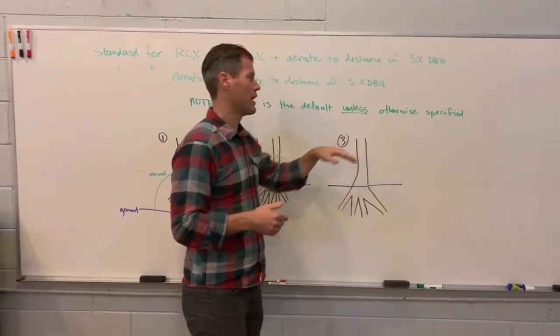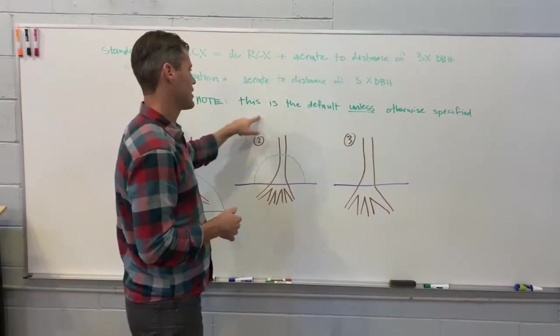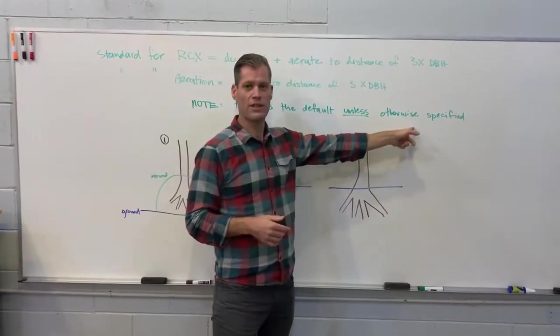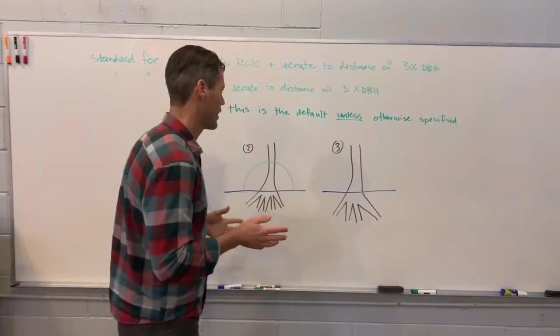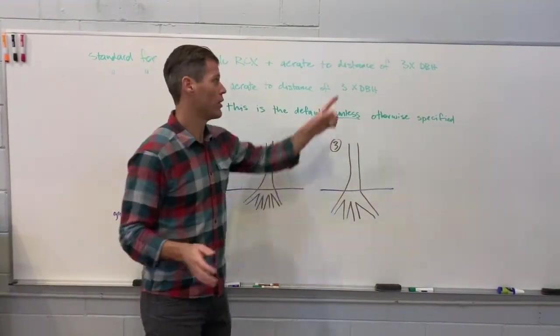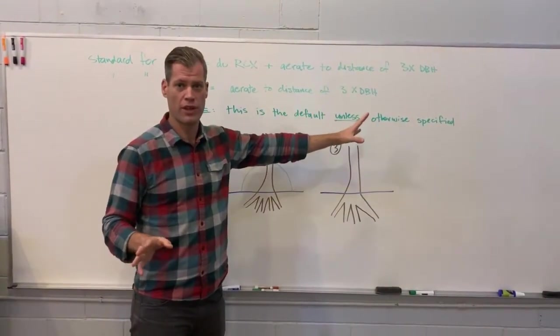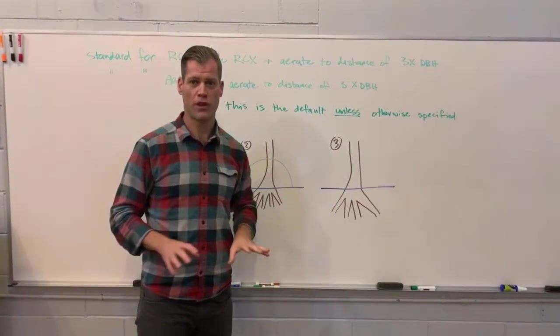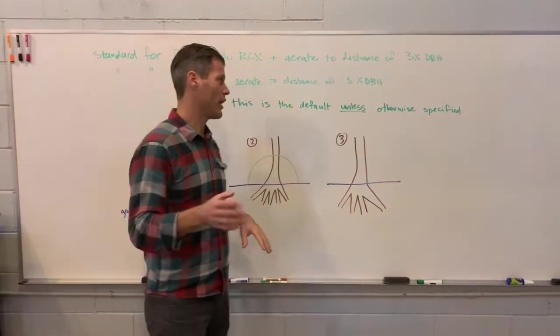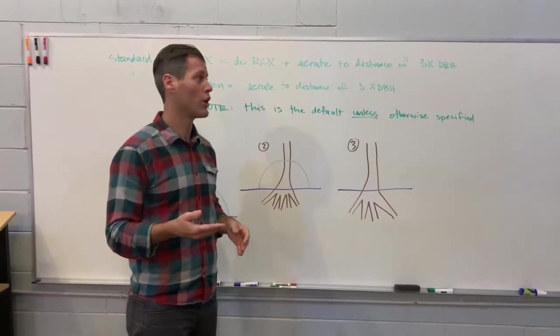Standard for aeration is air rate to a distance of three times DBH. Those are the defaults, unless otherwise specified. So for example, if they're young trees that have just been planted, hopefully sales have specified not to go three times DBH because we will kill the tree. In that scenario, the sales is specifically saying just brush away the root collar. If you find yourself in a situation where you think you're going to cause damage, make a phone call.